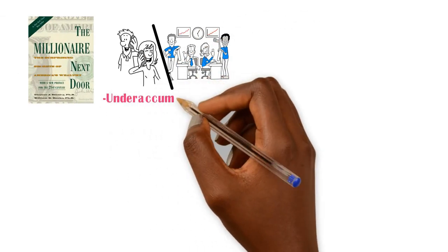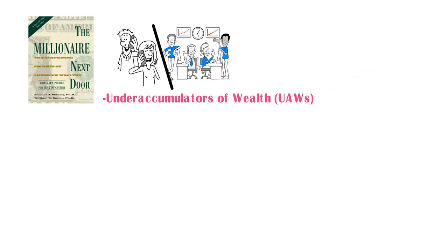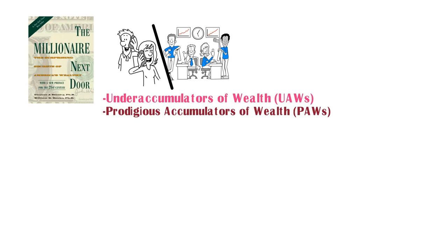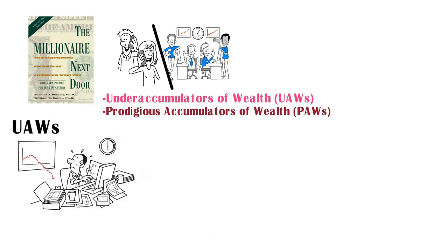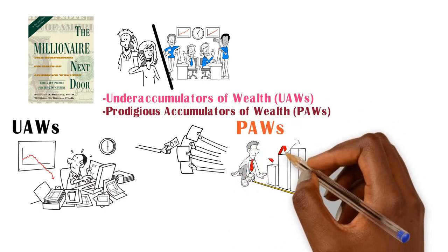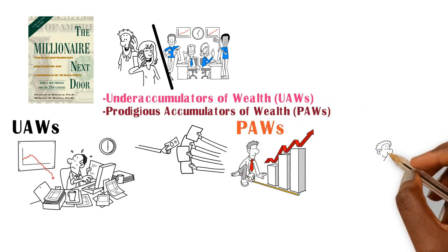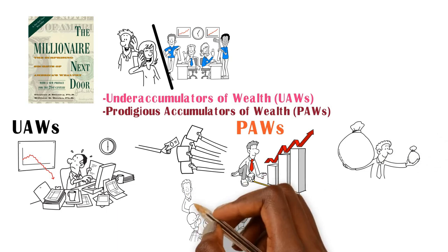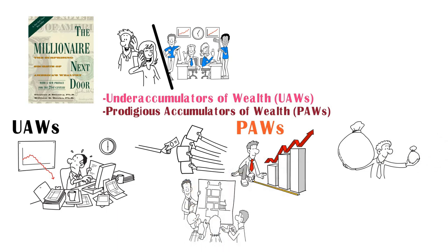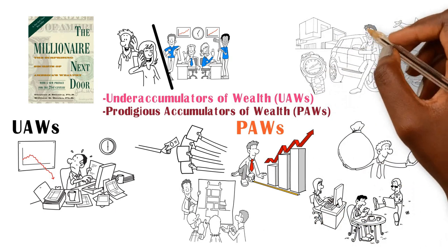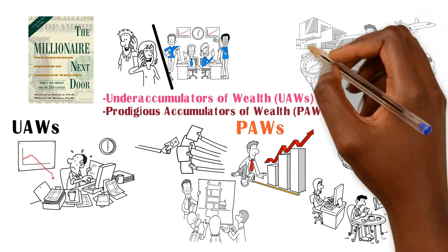They usually live in modest neighborhoods where the cost of living and social pressures of consumerism are lower. This book essentially splits everyone into two categories: under-accumulators of wealth (UAWs) and prodigious accumulators of wealth (PAWs). UAWs have a low net worth relative to income, and the opposite is true for PAWs. PAWs grow wealthy by living well below their means. These are people who do not fit into the stereotype of millionaires. They live in modest neighborhoods, drive practical sedans, and have blue-collar jobs.